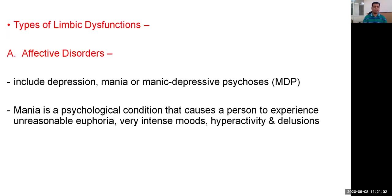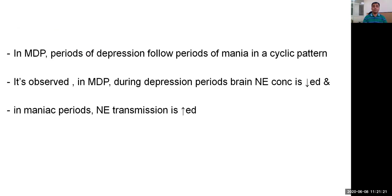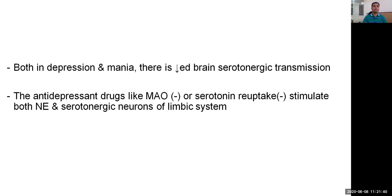Types of limbic disorders: The first is affective disorders, which include depression and mania or manic depressive psychosis. Mania is a psychological condition causing a person to experience unreasonable euphoria, very intense moods, hyperactivity, and delusions. In manic depressive psychosis, periods of depression follow periods of mania in a cyclical pattern. During depression, the brain's norepinephrine concentration is decreased, and in manic periods, norepinephrine transmission is increased. Both in depression and mania, there is a decrease in brain's serotonergic transmission. Antidepressant drugs like monoamine oxidase inhibitors or serotonin reuptake inhibitors stimulate both norepinephrine and serotonergic neurons.